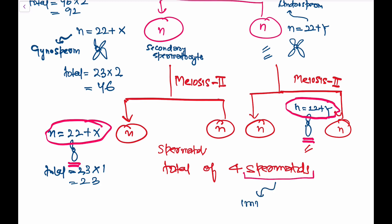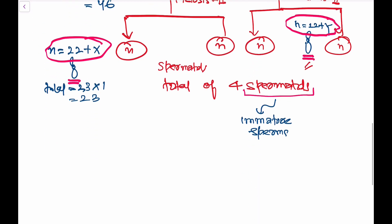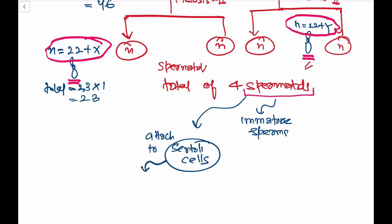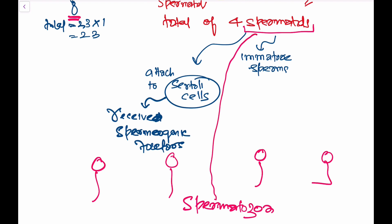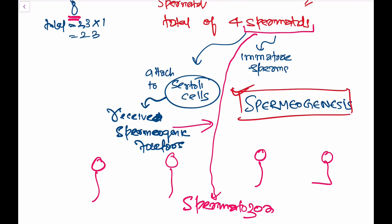Spermatids are immature sperms — they are not fully functional. They attach to special cells called Sertoli cells, which provide nourishing chemicals called spermiogenic factors. Upon receiving these spermiogenic factors, all spermatids are transformed into functional sperms, also called spermatozoa. This transformation process is called spermiogenesis.